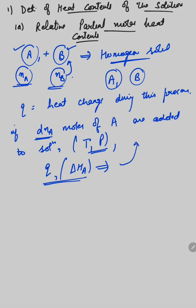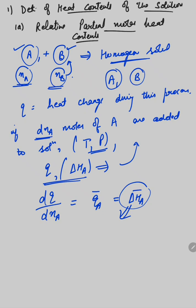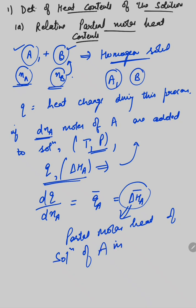Let delta HA be the amount of heat change during this process. Then dQ/dnA — the change in heat with change in number of moles of A — is given by Q̄A or delta H̄A. This is the partial molar heat of solution of component A in the solution.